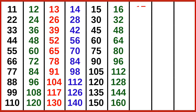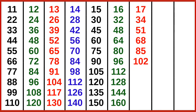17 ones are 17, 17 twos are 34, 17 threes are 51, 17 fours are 68, 17 fives are 85, 17 sixes are 102, 17 sevens are 119, 17 eights are 136, 17 nines are 153, 17 tens are 170.